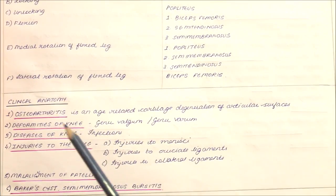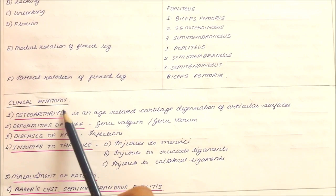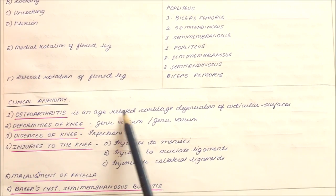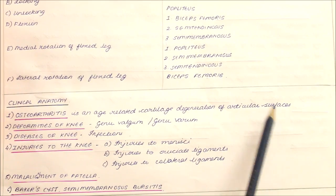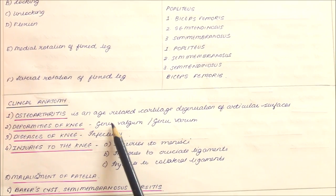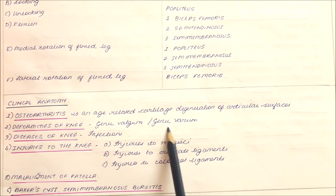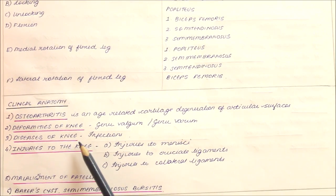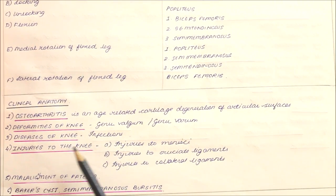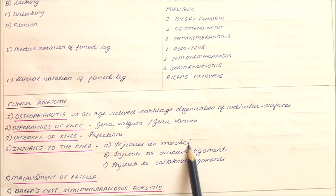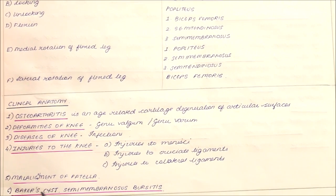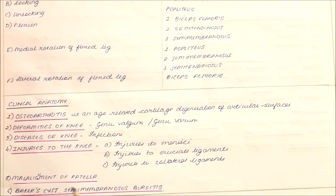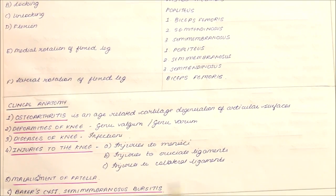Regarding the clinical anatomy of the knee joint: osteoarthritis is an age-related cartilage degeneration of the articular surface. Deformities include genu valgum and genu varum. Diseases include infections. Injuries include injuries to the menisci, the cruciate ligaments, and the collateral ligaments, malalignment of the patella, Baker's cyst, and semimembranosus bursitis.